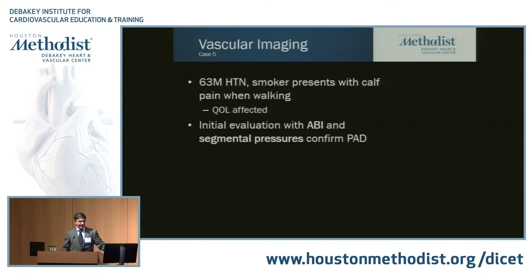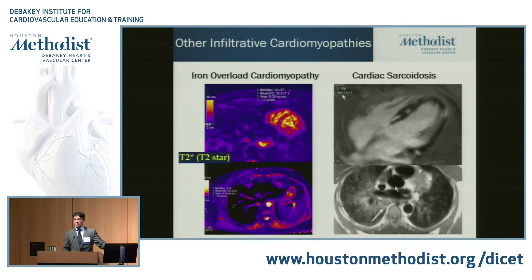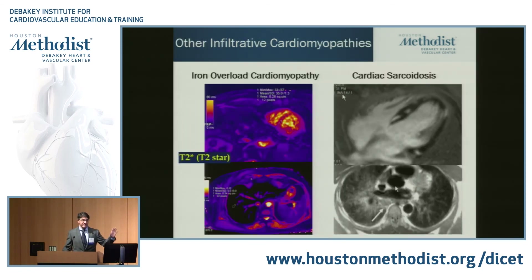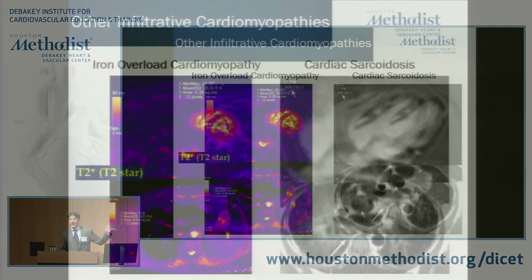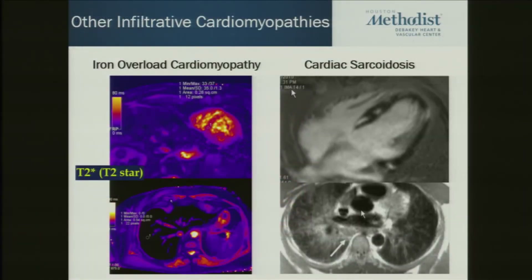We can also evaluate other infiltrative cardiomyopathies. Iron overload can be accurately identified with a technique called T2-star. And for patients where you're looking for cardiac sarcoid, CMR is also a very important tool.